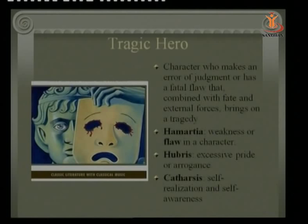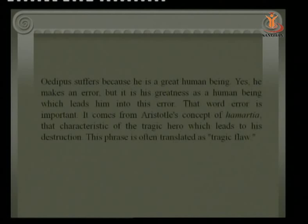Oedipus suffers because he is a great human being — he makes an error, but it is his very greatness as a human being that leads him into his error. That word 'error' is important: it comes from Aristotle's concept of Hamartia, the characteristic of the tragic hero that leads to his destruction. This phrase is often translated as 'tragic flaw.'